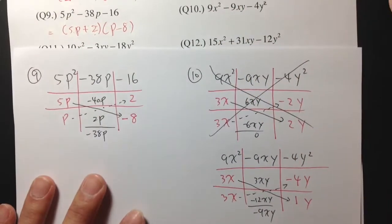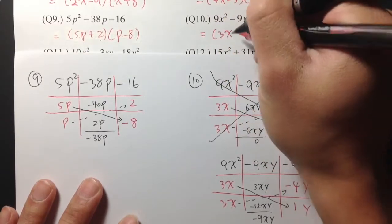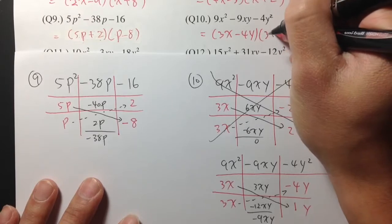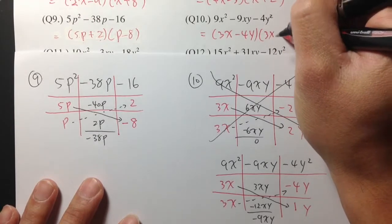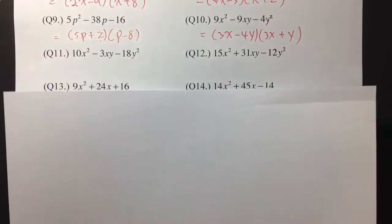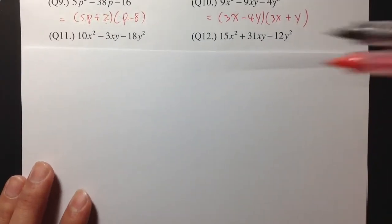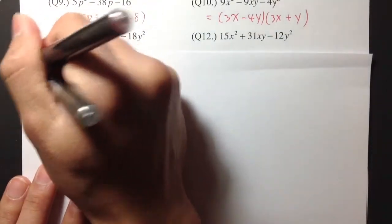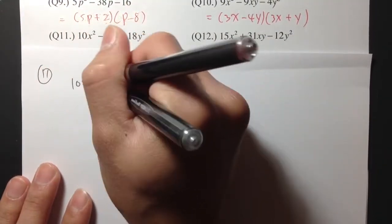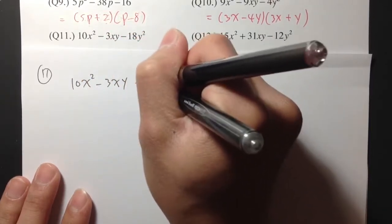So let me write it down right here. This is (3x − 4y)(3x + y). Okay, for number 11, we have 10x squared minus 3xy minus 18y squared.